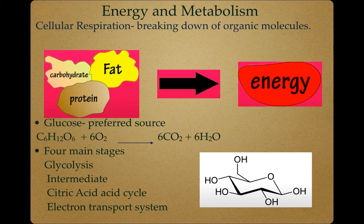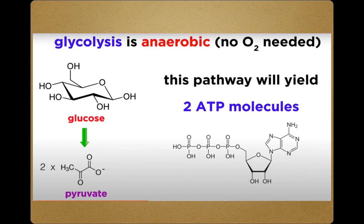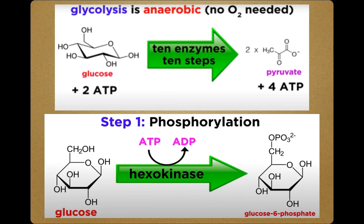Almost all living organisms carry out glycolysis as part of their metabolism. It is an anaerobic process, meaning it does not use oxygen, while the other three processes are aerobic since they require oxygen. Glycolysis happens inside the cytoplasm of the cell. In glycolysis, glucose molecules are split into two pyruvates, and one glucose molecule can yield a net of two ATPs. Hexokinase phosphorylates glucose using ATP as the source of the phosphate, producing glucose-6-phosphate, a more reactive form of glucose.